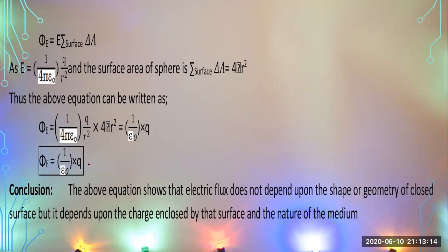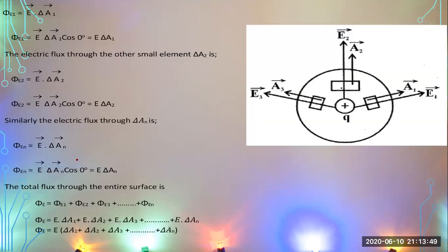The conclusion from this result is important: the above equation shows that the electric flux does not depend upon the shape or geometry of a closed surface. It depends only upon the charge enclosed by the surface and the nature of the medium. These are the two factors that determine the electric flux through a closed surface.